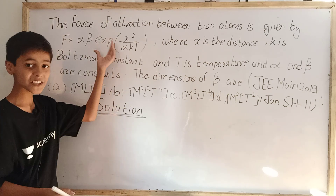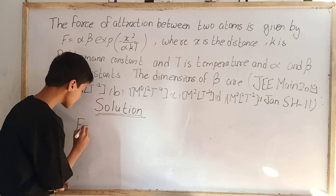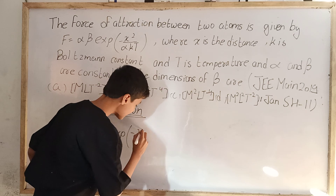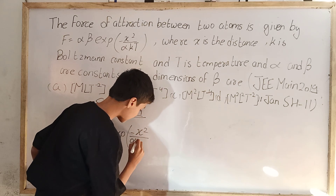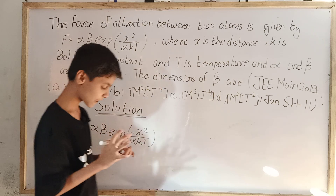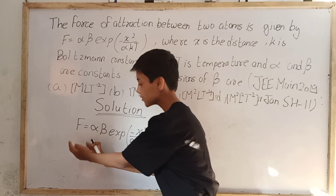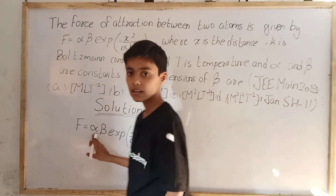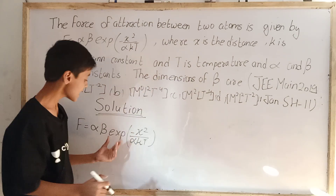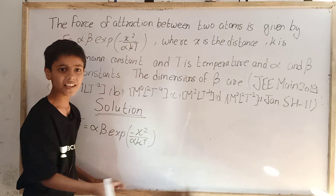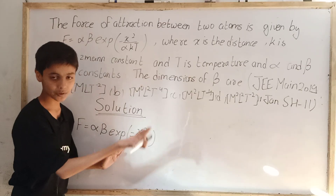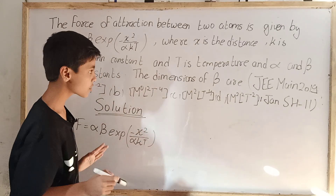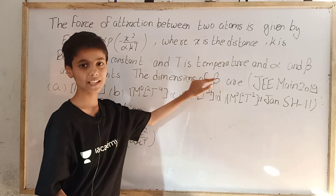The equation given is F = alpha·beta·exp(−X² / (alpha·K·T)). F is the force of attraction between two atoms, alpha and beta are constants, X is distance, K is Boltzmann constant, and T is temperature. We have to find the dimensional formula for beta.